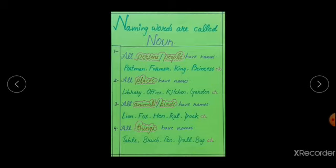So many animals and birds you know, like parrot, cock, tiger, bear, deer. Number four, all things have names, like table, brush, pen, doll, bag, etc. You can see many things in your class also, like duster, chalk, benches, whiteboard, blackboard, etc. These all are things.